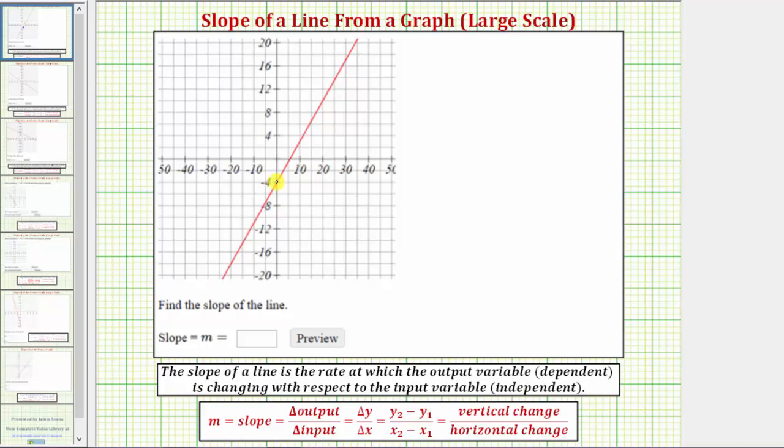For example, this point here, the point where it crosses the vertical axis, which is called the vertical intercept, would have coordinates (0, -4). Then let's say this point here would have coordinates (20, 10).